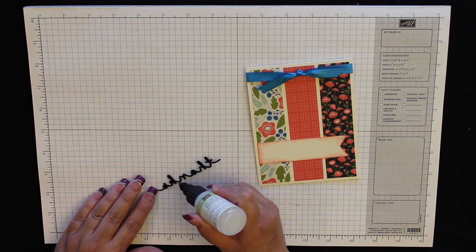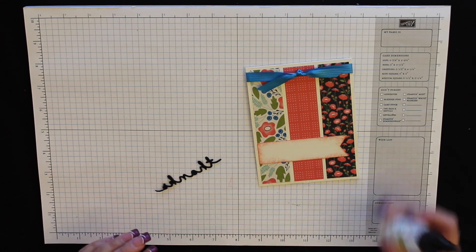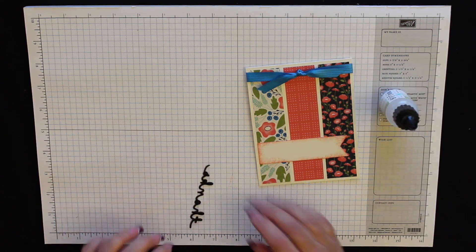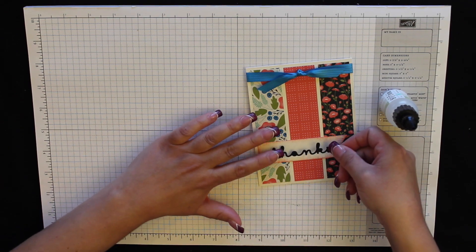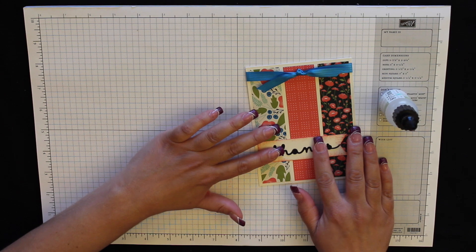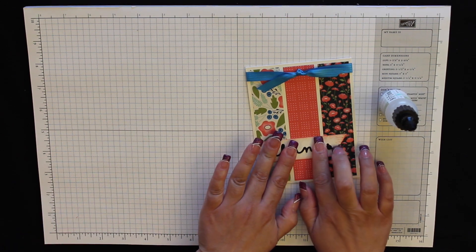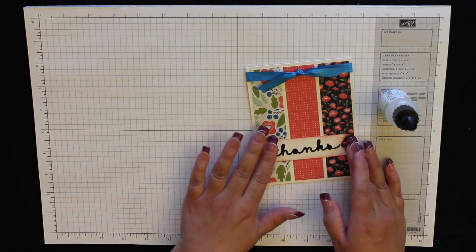And it's such a fine tip. You can get all these little teeny thin pieces. Pick it up. And it goes right here, centered on the strip. Give that a second to take hold.